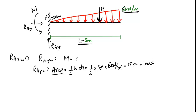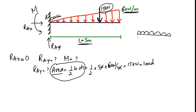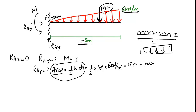The first step is always to find the area of the load shape. For a triangular load we use the triangle area formula. For a uniformly distributed load we find the rectangle area, and for a trapezoidal load we find the trapezoidal area. So the resultant load is 15 kN acting on this beam.